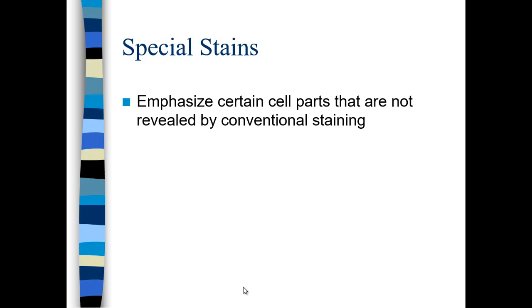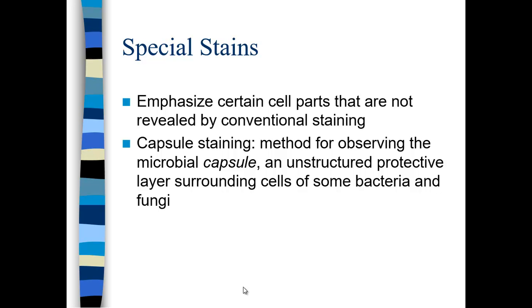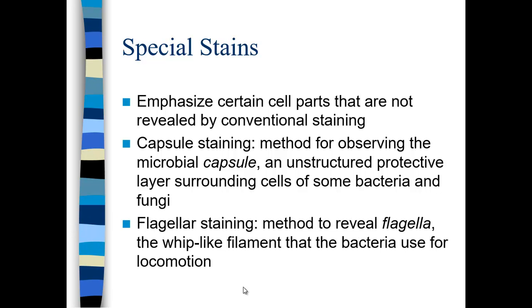We can have other stains that emphasize certain structures like the capsule or the flagella. The capsule is the coating outside the bacteria — it can be diffuse like a slime layer, or more tightly associated. It's a protective layer, and we stain the background and the cells so the capsule appears white. For flagellar staining, we use a silver stain to reveal flagella more vividly — they're very small and difficult to see, but you can see the filament in a whip-like or coiled form.